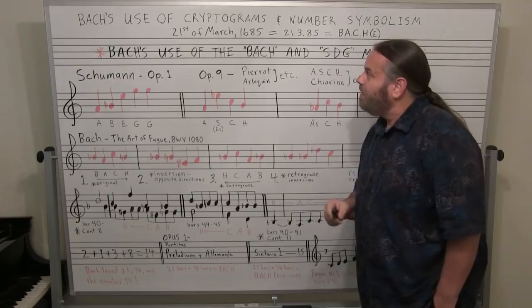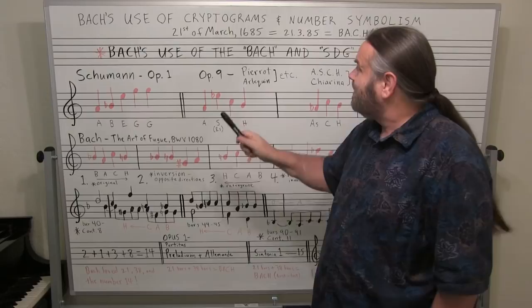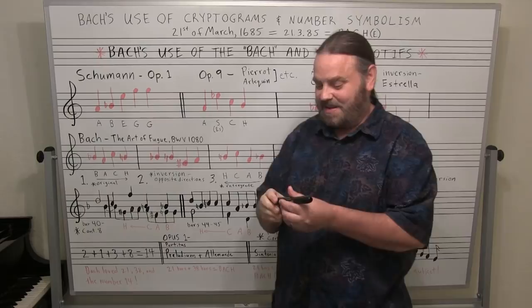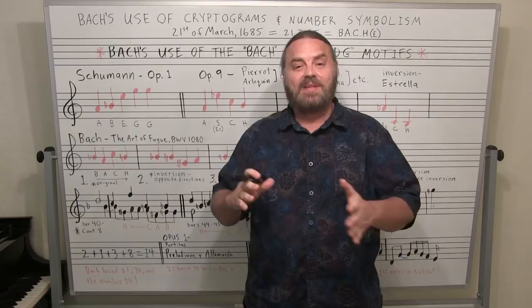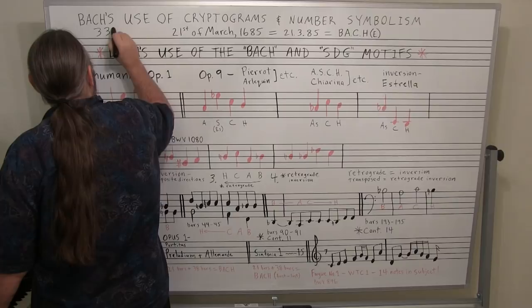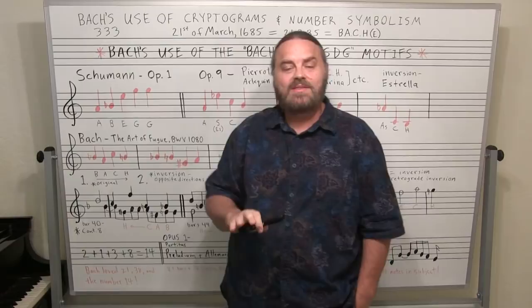Here's something fascinating — Bach was born on the 21st of March, 1685. Europeans write the date first, then the month, so we have: 21, 3, 85 — omitting the '16' as is traditional. So we have 21, 3, 85. If you assign letters of the alphabet to each digit, you get B for 2, A for 1, C for 3, and H for 8. B-A-C-H. Bach's birthday was his name.